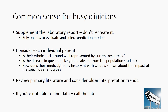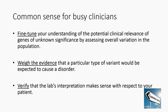Critically review the primary literature cited in a report and consider older interpretation trends, particularly the tendency to over-interpret variants in older literature. If you can't obtain data listed in a report, contact the lab. Genes of uncertain significance are frequently reported by exome and genome testing and are often included within copy number variant regions reported by chromosomal microarray. Population data can help you fine-tune your understanding of the potential clinical relevance of these genes by assessing overall variation in the population. Weigh the evidence that a particular type of variant would be expected to cause a disorder, since not all variant types have the same impact on a gene's function and may not have the same phenotypic consequences. Verify that a lab's interpretation makes sense with respect to your patients.